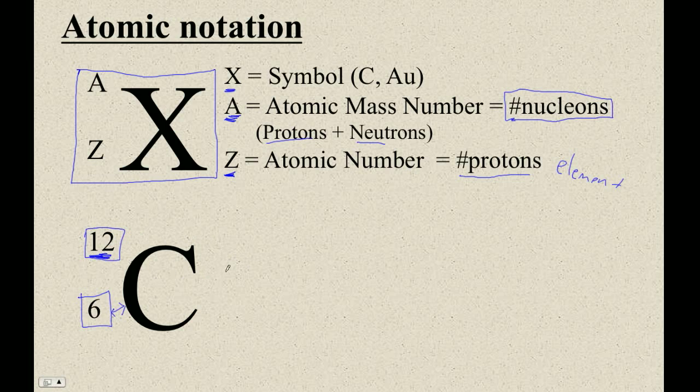Now, if 12 is the number of neutrons and protons, and 6 is the number of protons, then how many neutrons are there? Well, there's 12 minus 6, that's good handwriting.